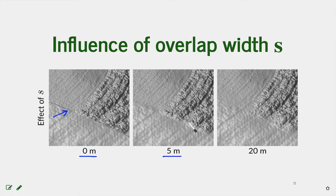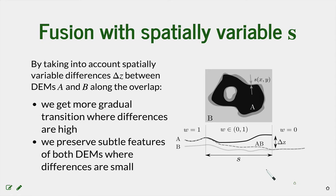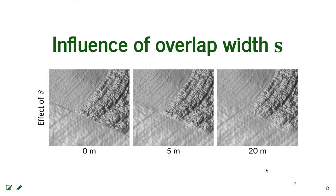If the overlap is 5 meters, you can still see the edge a little bit, but the transition is much smoother. With 20 meters, you get a very smooth transition, but you also start losing some detail in the UAS-based digital elevation model. This indicates that the width of this overlap matters.